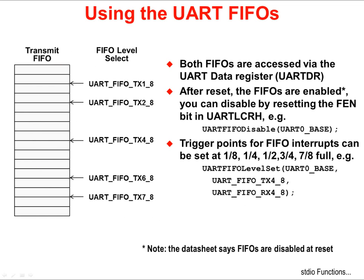Both the transmit and receive FIFOs are accessed through the UART data register. While the datasheet indicates that the UART's FIFOs are disabled at reset, basic configuration of the UART module re-enables this feature by default. They can easily be disabled if necessary. Trigger points for the generation of UART interrupts can be set at the 1/8, 1/4, 1/2, 3/4, 7/8, and full points for the FIFOs.